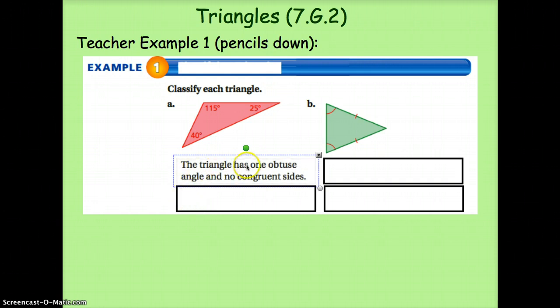So that means it has one obtuse angle and no congruent sides. Our one obtuse angle is right here at 115 degrees. And because the angles are all different, that means all the side lengths must be different.